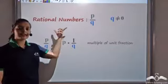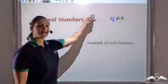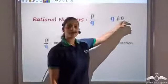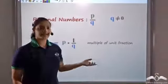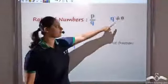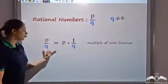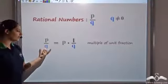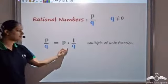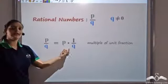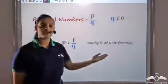We defined rational numbers as p by q, where q cannot be zero and p and q can be any integers. Another way to look at p by q would be p times one by q — that is, a multiple of a unit fraction. So this is how we defined rational numbers.